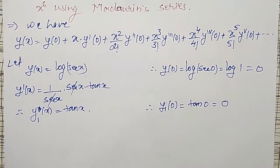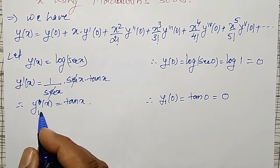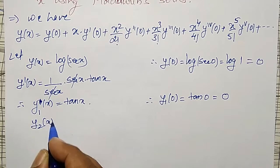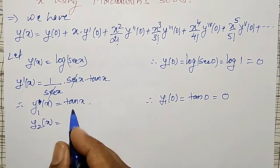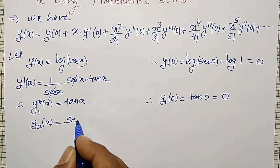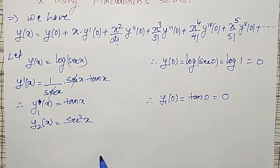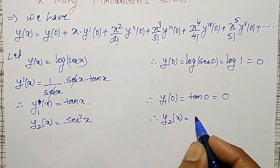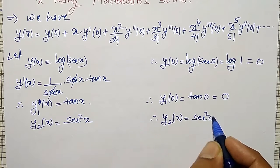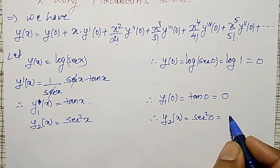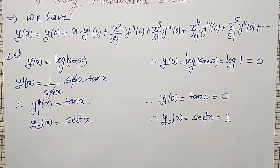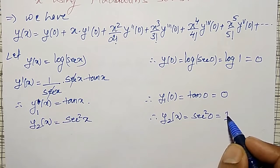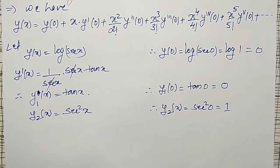Now I have to calculate y2(x). What is y2(x)? Differentiate y1 again: y2(x) is equal to the differential of tan x, which is secant squared x. Therefore y2 at 0 equals secant squared 0. Since secant 0 is 1 by cos 0, which is 1, y2(0) is equal to 1.